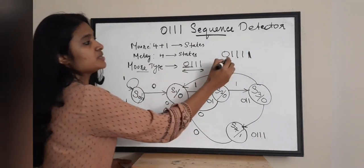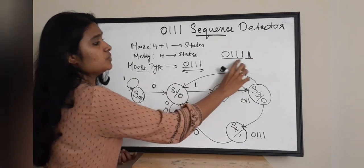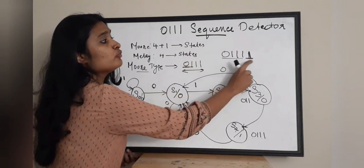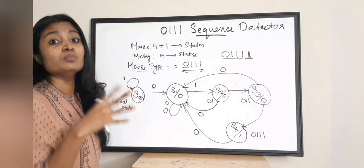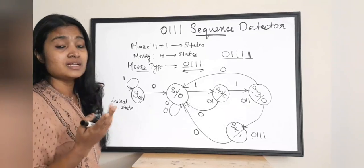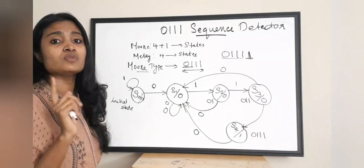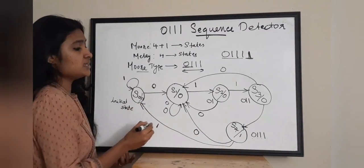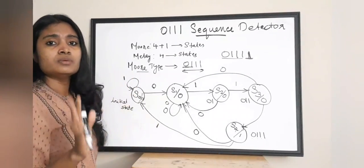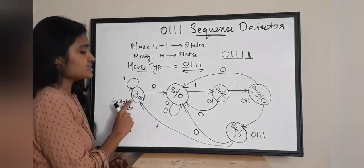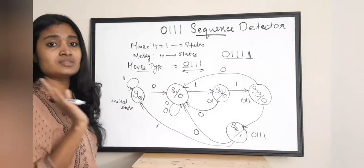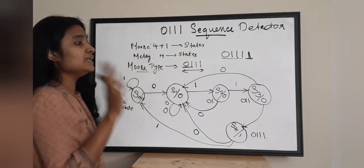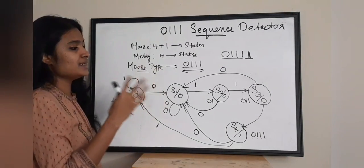If you receive a 1 in S4 state, you would have four ones together, but your sequence requires a 0 before three ones. So your sequence has actually broken — you cannot proceed. In any state if your sequence is broken you jump back to the initial state, S0. So in S4, receiving a 1 means you jump back to S0. This is the state diagram for a Moore type FSM detecting sequence 0 1 1 1.